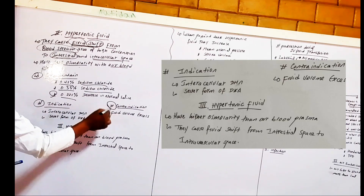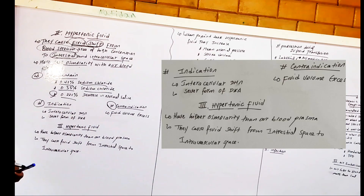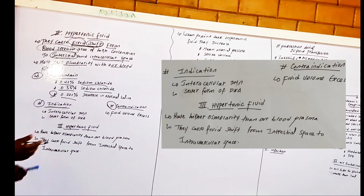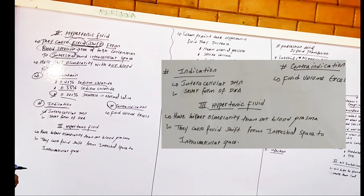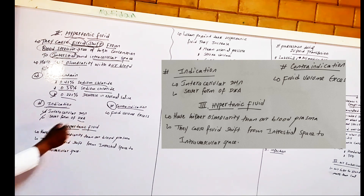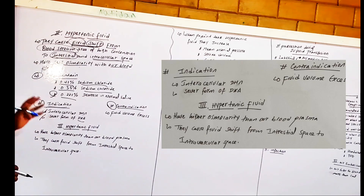What are the indications and contraindications for hypotonic fluid? Hypotonic fluid is indicated when the patient has intracellular dehydration. It is also indicated in a severe form of diabetic ketoacidosis.